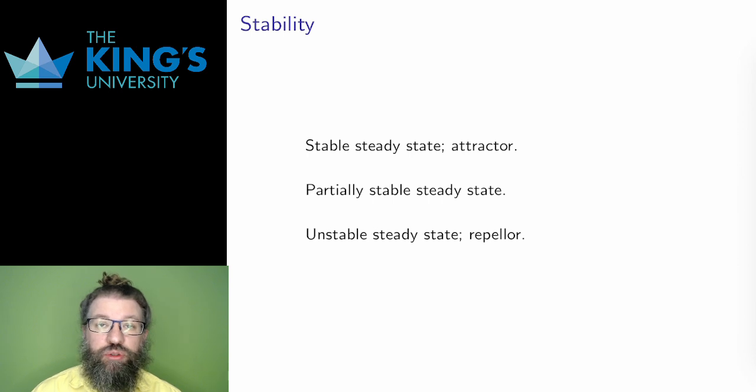First, it might be true that if the system starts just a little bit away from capital P, the long-term behavior is to return back to the steady state. This is called a stable steady state, or an attractor.